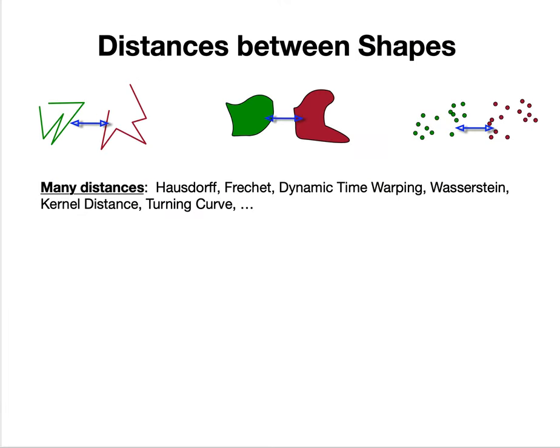This is a talk about distances between shapes. There are many distances between shapes in various forms - piecewise linear curves, general closed sets, or point sets. These include the Hausdorff distance, Frechet distance, dynamic time warping, Wasserstein distance, kernel distance, turning curve distance, and many more. This talk is about one more distance between shapes.